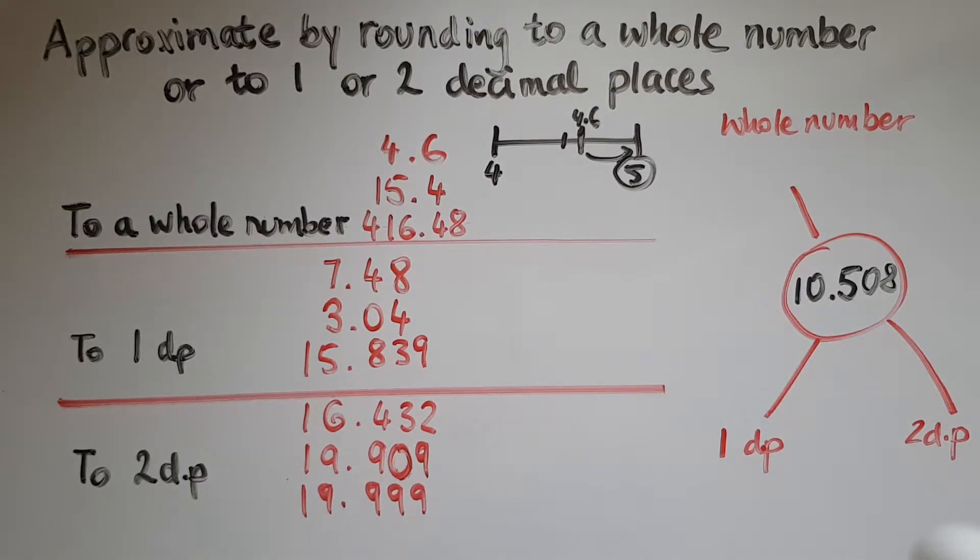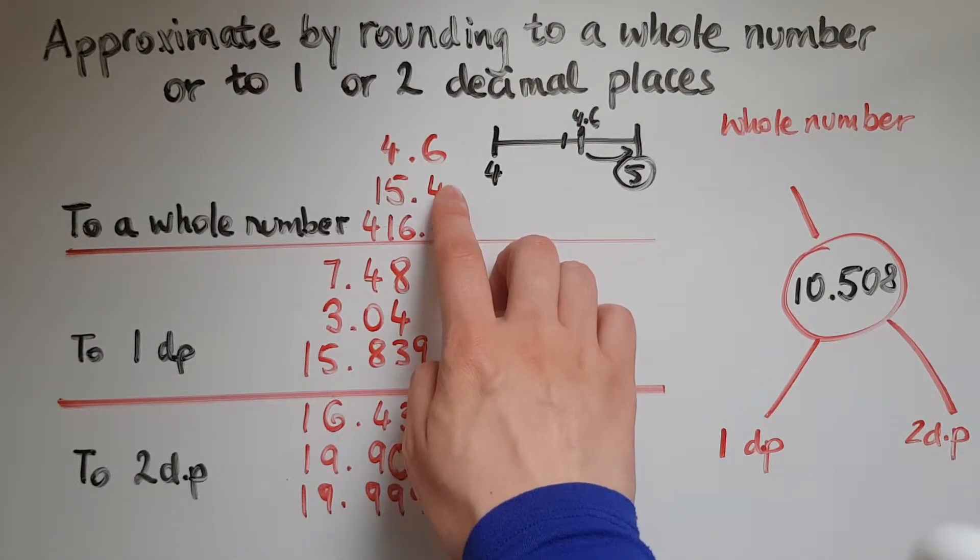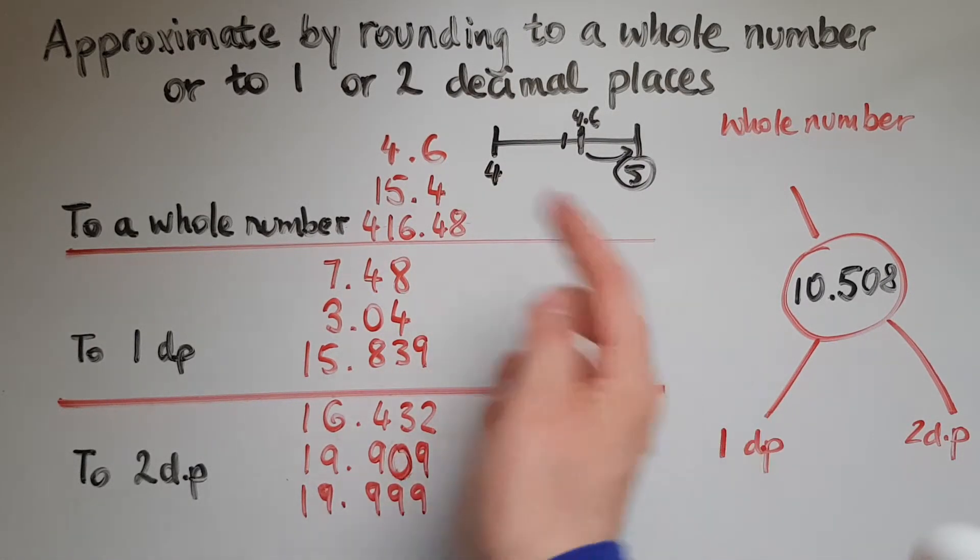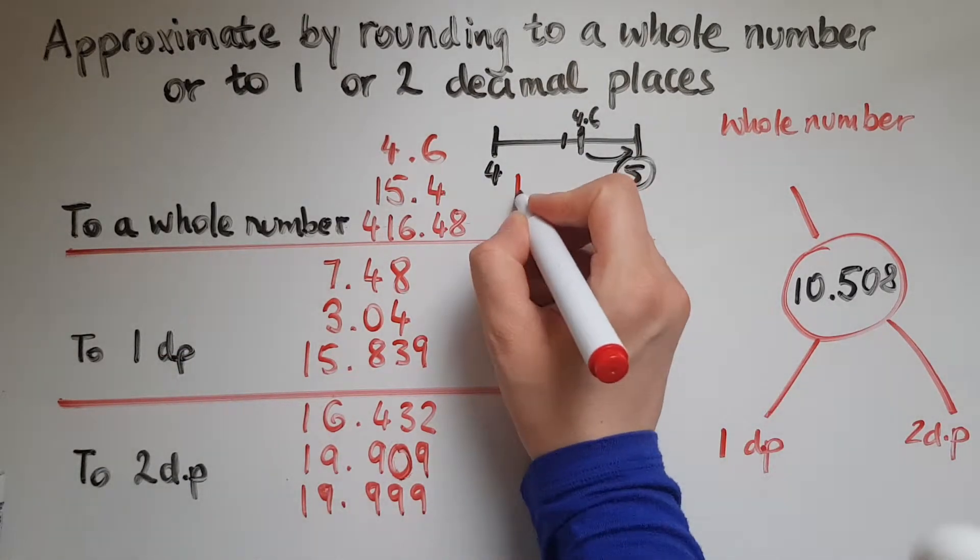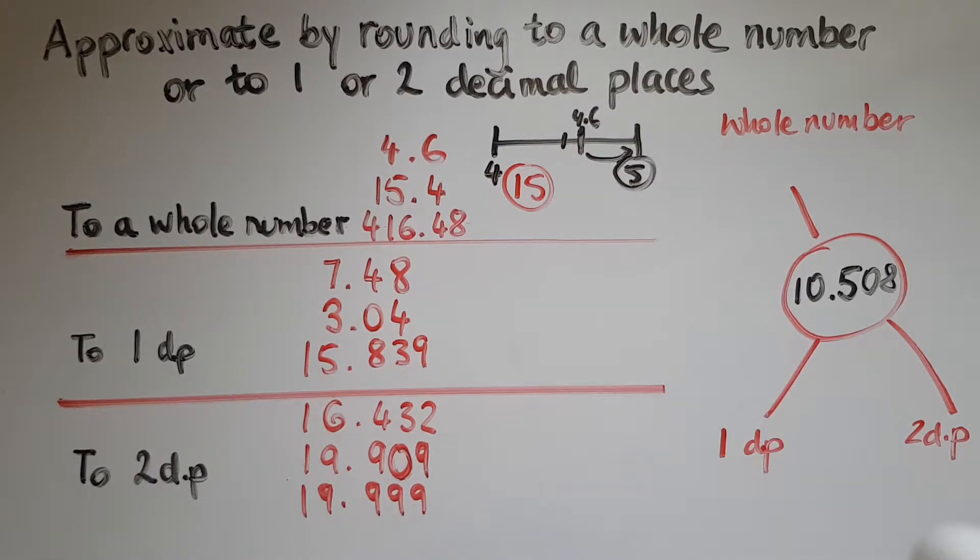Round it to the nearest whole number, that is 5. 15.4 is between 15 and 16 and that is 0.4, which means it's closer to 15. So the answer will actually be 15 to the nearest whole number.